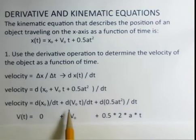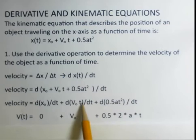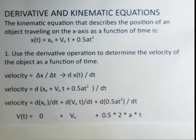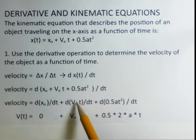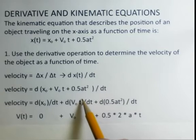For the derivative of v-naught times t, in the power derivatives, we pull down the power as a multiplying coefficient. This is t to the first power, and then we reduce the power by one.